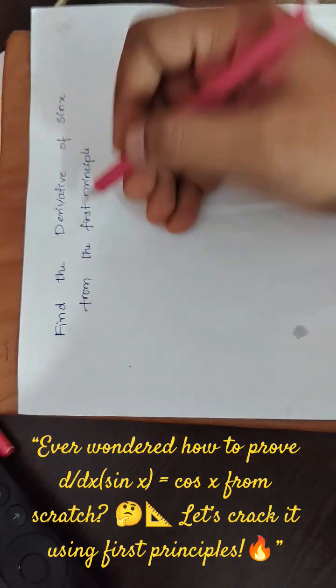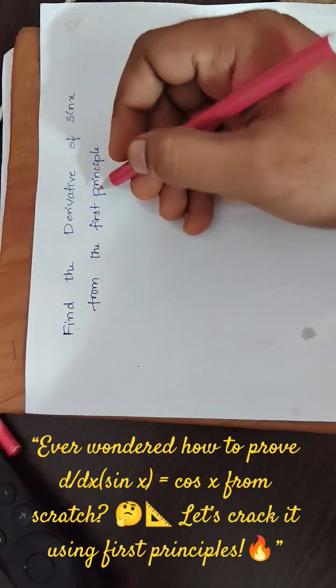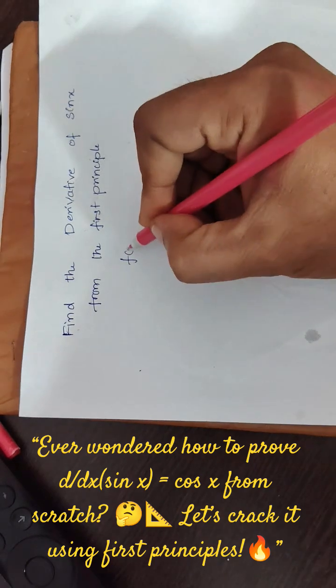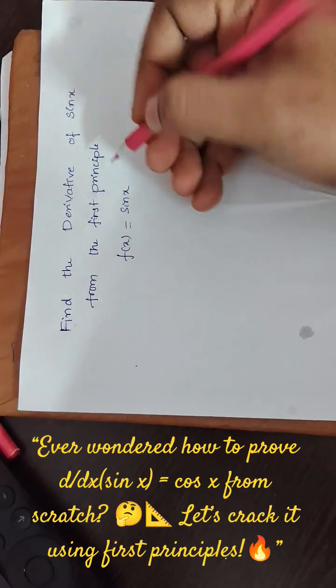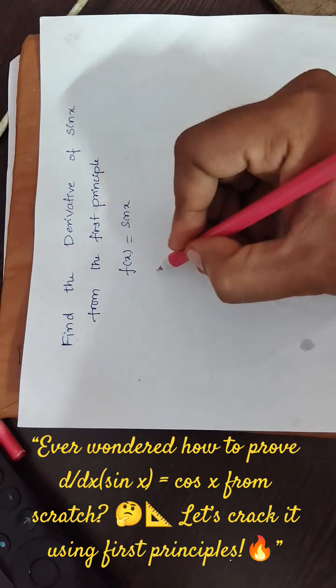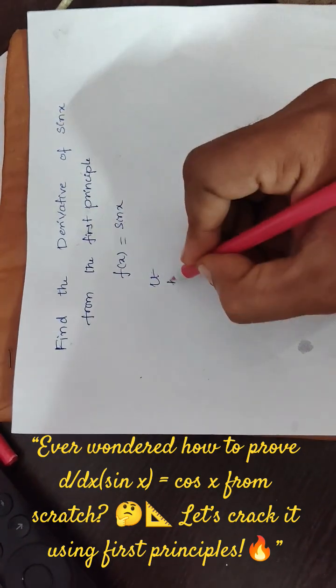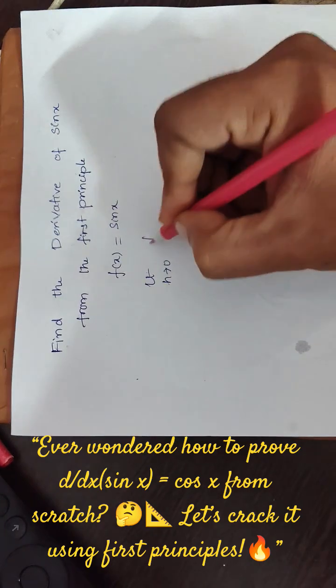Find the derivative of sin x from the first principle. So here, let f of x equals sin x. And the derivative from the first principle formula is limit h tends to 0, f of x plus h minus f of x by h.